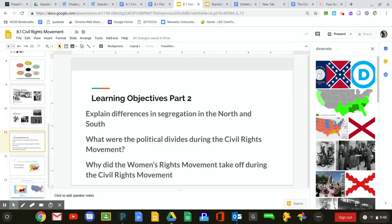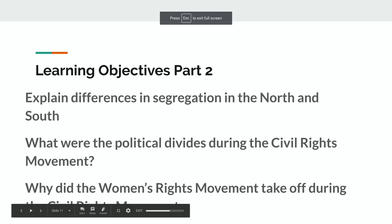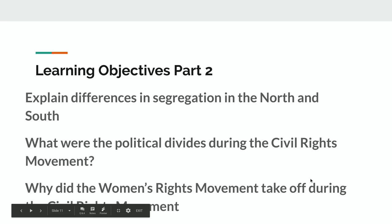Today we're going to be looking at part two of our Civil Rights lesson on Indicator 8.1. We are going to start with the learning objective questions for this section. There are three of them that you need to know: explain the differences in segregation in the North and the South; what were the political divides during the Civil Rights Movement; and why did the Women's Rights Movement take off during the Civil Rights Movement?